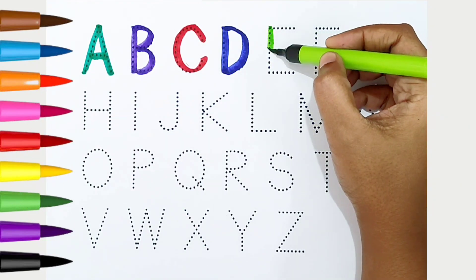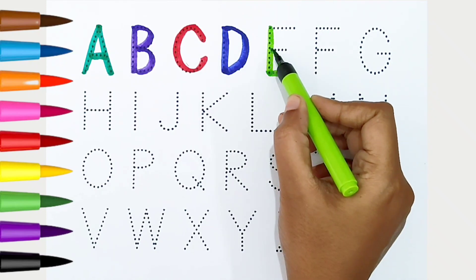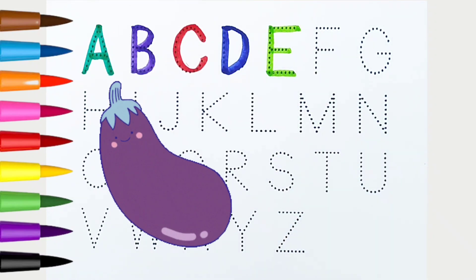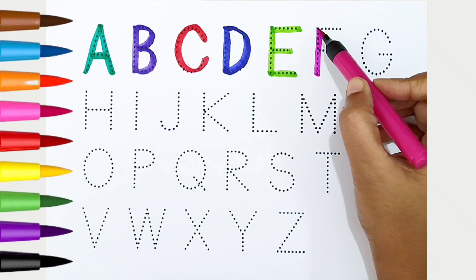E, light green color. E is for eggplant. F, dark pink color. F is for fish.